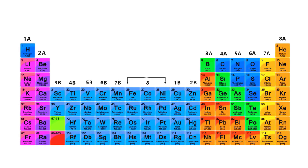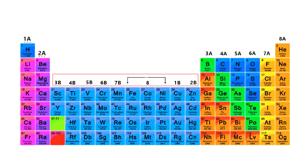First, note down this periodic table. We can see that hydrogen is in the first A group, beryllium is in the second A group. These are all sub or B groups of the third group, like 1B, 2B, 3B, etc. Boron is in the 3A group, carbon is in the 4A group, and so on. Remember these group numbers, which we will use in this lecture.